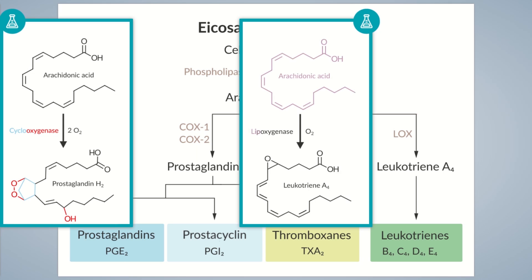That wraps up the most important enzymes involved in eicosanoid formation. Before moving on to physiological roles, we should address terminology. The letters in eicosanoid names indicate different functional groups in the ring. The subscript at the end stands for the number of carbon double bonds in the molecule. Prostaglandins and thromboxins, which are metabolites of arachidonic acid, have two double bonds and are easily identified by the subscript two.